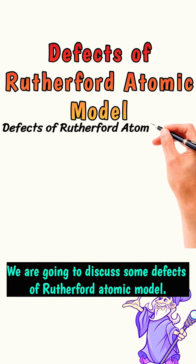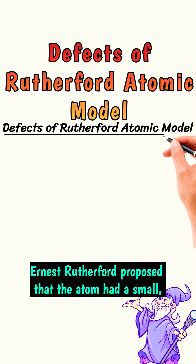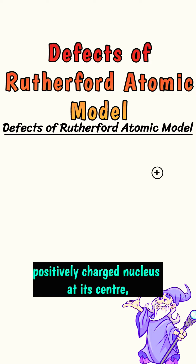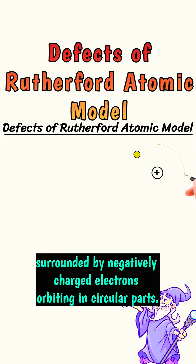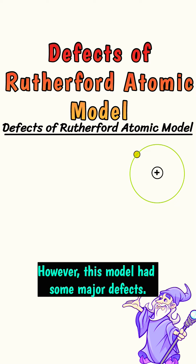Some defects of Rutherford's atomic model. Ernest Rutherford proposed that the atom had a small, positively charged nucleus at its center, surrounded by negatively charged electrons orbiting in circular paths. However, this model had some major defects.